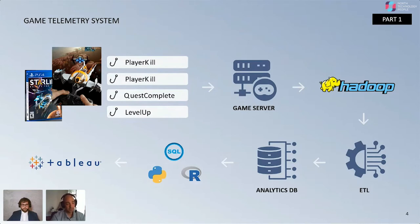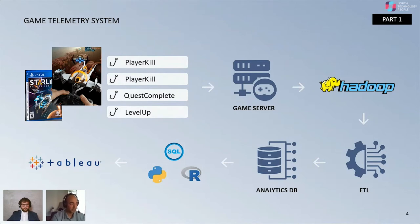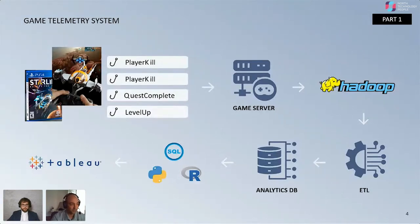Once the data is sent from client to game server, it is distributed into big data platforms such as Hadoop. Next, the data is extracted, transformed, and loaded — an ETL process everyone here is likely familiar with. This allows game analysts to consume data in a structured, tabular database format. Finally, we're able to analyze millions, if not billions, of records using SQL, Python, or R, and the data is ready for consumption in a BI platform. At Ubisoft, we heavily use Tableau.